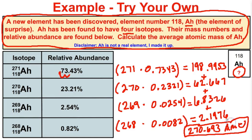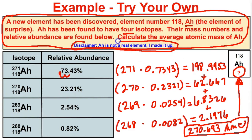So we just found the average atomic mass of element 118 — the element of surprise. That is going to be the number that will go right here on the periodic table. Now, element 118 does not exist — I completely made this up, this is just a fictional element. However, that is how scientists have determined the average atomic masses on the periodic table of elements. If you like what you see, go ahead and click the button in the bottom right-hand corner to subscribe to my channel, and feel free to leave any comments or questions in the comment section below. I hope you guys found this helpful.